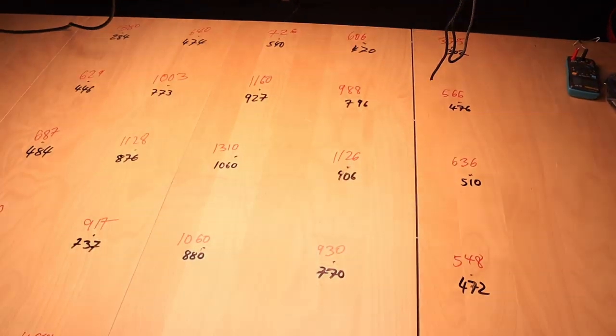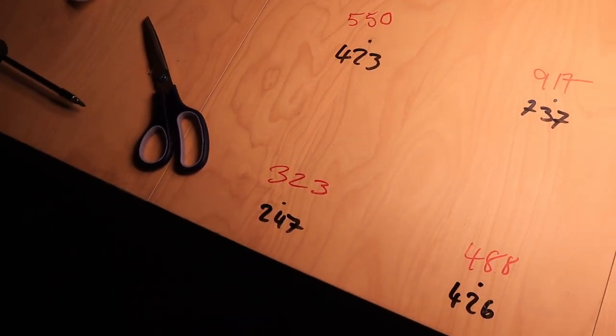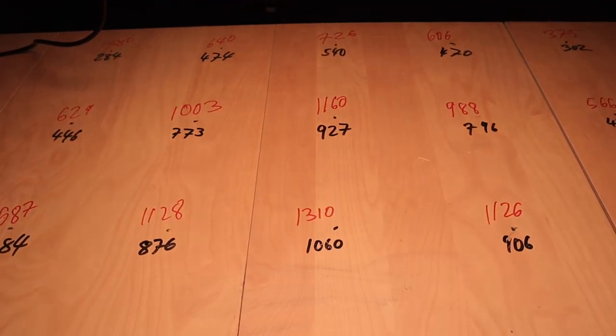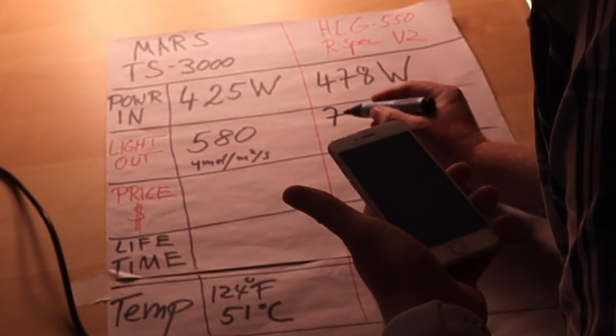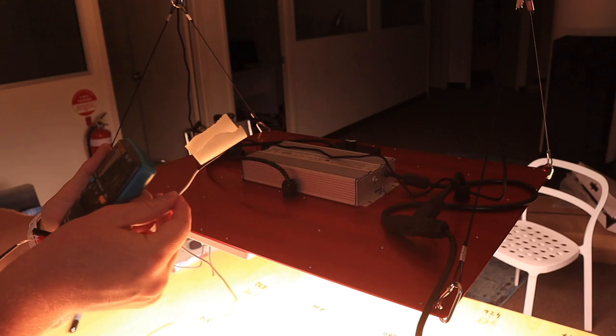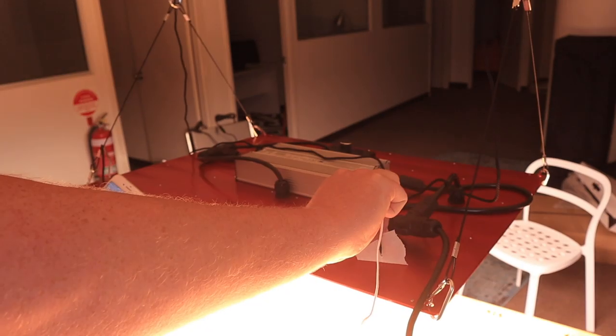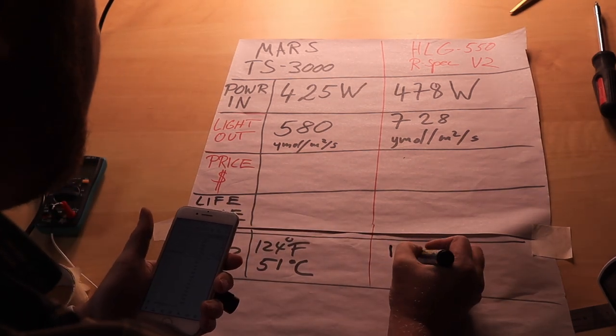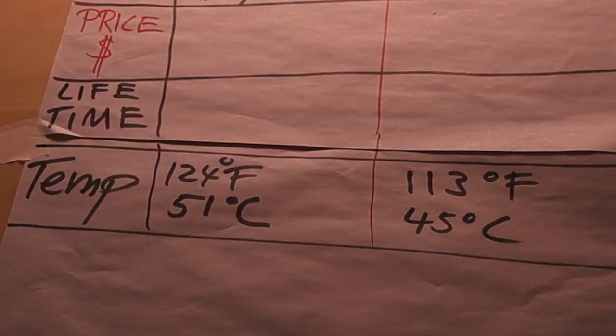So in red we have the HLG numbers and in black the mass. And the average light out is 728 micromole. Let's find out how warm this thing gets. And the average temperature is 113 Fahrenheit. And that means it's about 10% cooler than the mass.